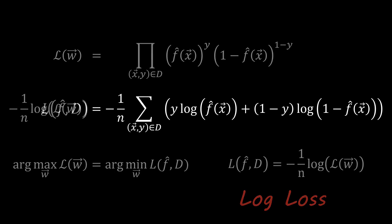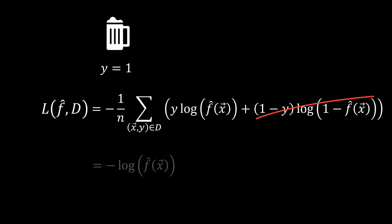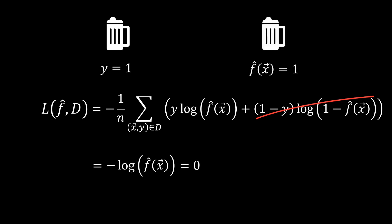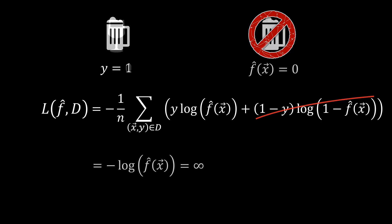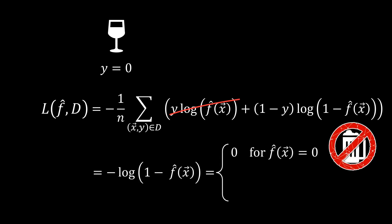Let us examine this loss function a bit further to see whether it behaves as expected. If our dataset consists of a single example which happens to be a beer, the second part becomes zero and our loss reduces to just that part. If our model predicts with certainty that it is a beer, the loss is zero. If on the other hand our classifier predicts with perfect confidence that this is not a beer, it will incur an infinite cost. Similarly, if we are given a liquid that is not beer, if our model predicts correctly that it is not beer it will suffer no loss, and if it predicts with confidence that it is beer it will incur a high loss.